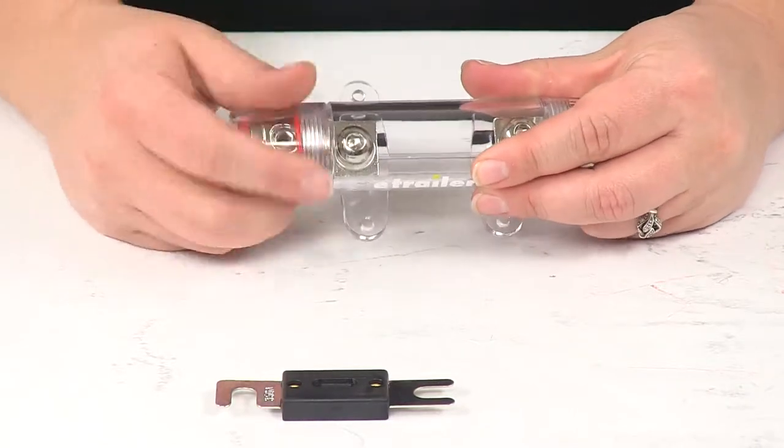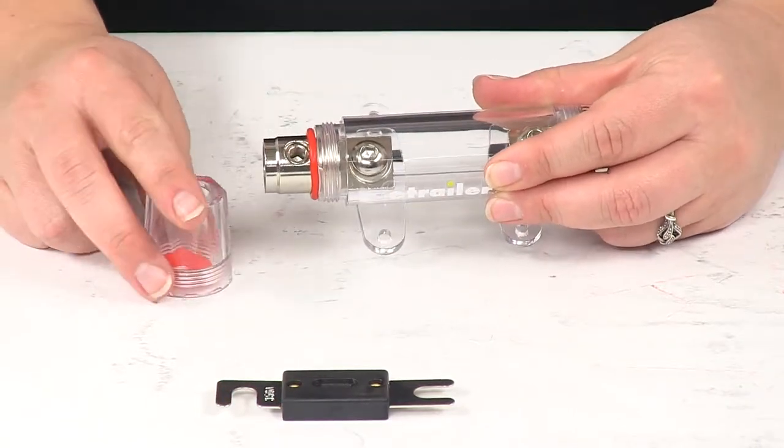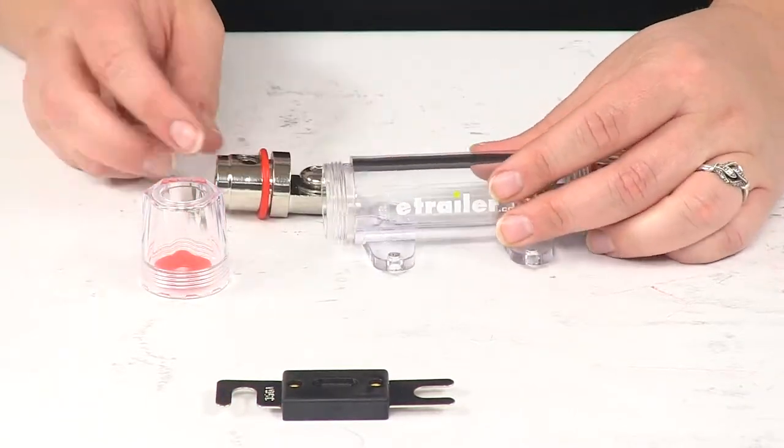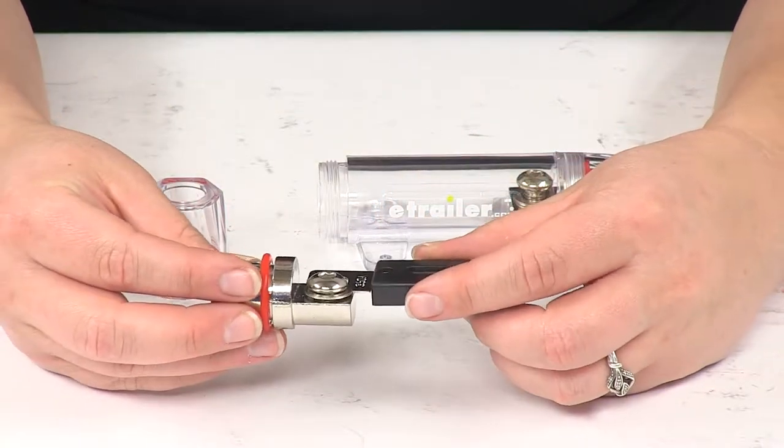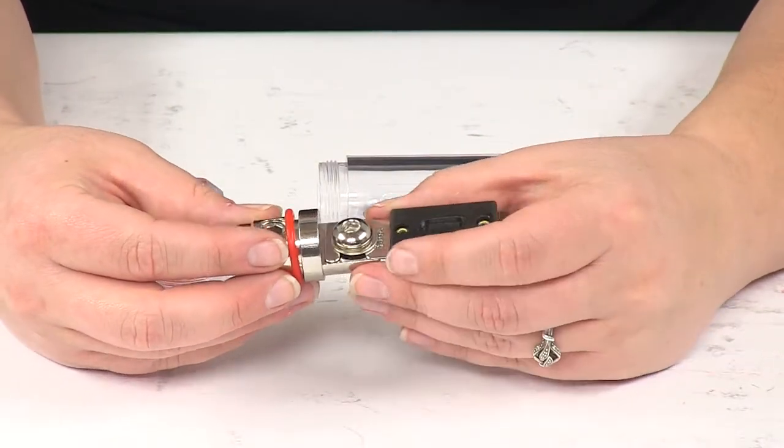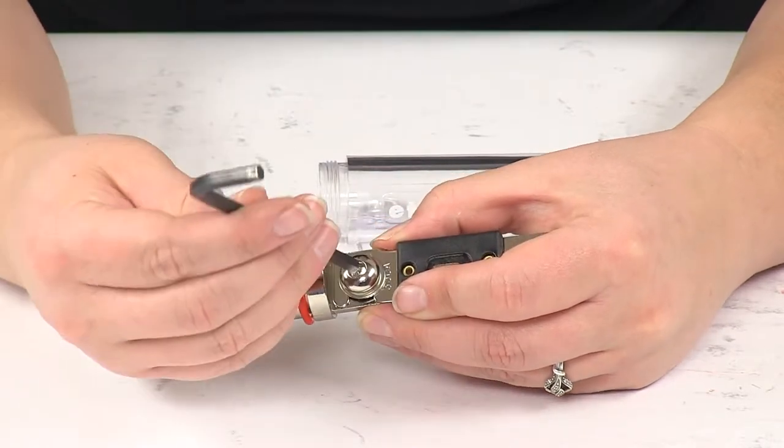Now to get that fuse in place, you'll just need to unthread one of the ends and then slide one end of the fuse underneath that bolt and washer.